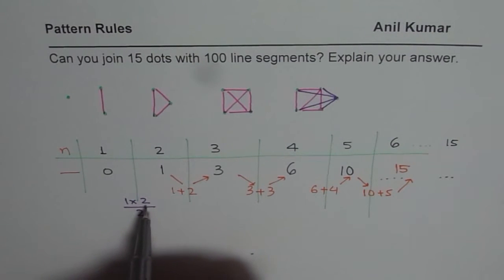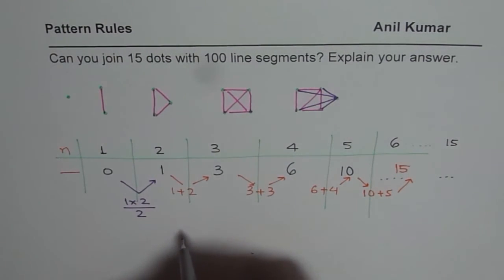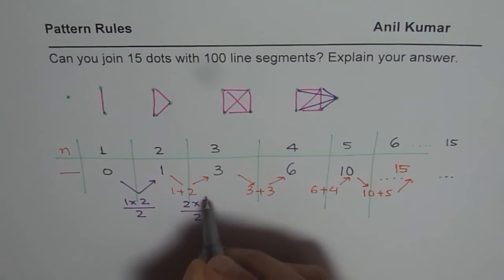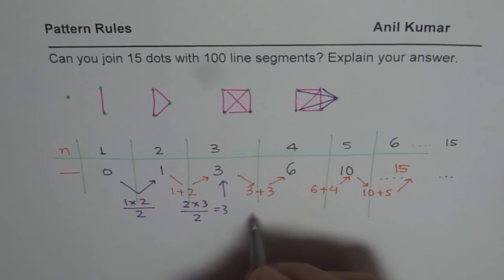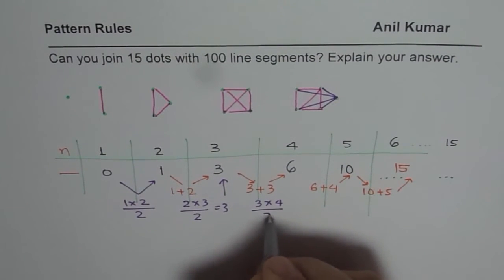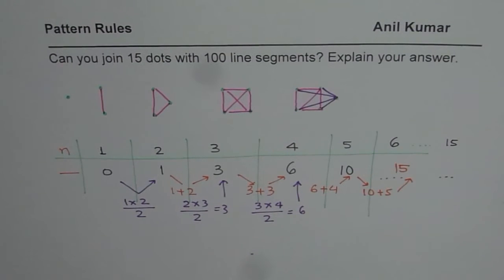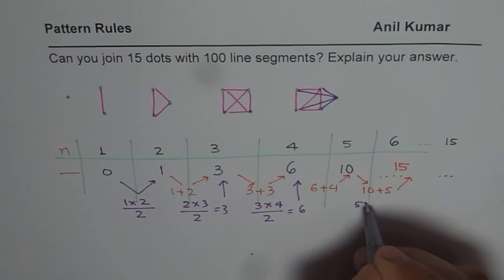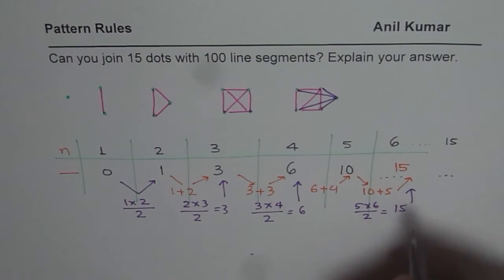The formula is n times (n−1) divided by two. Let's verify: one times two divided by two equals one — correct. Two times three divided by two equals three — correct. Three times four divided by two is twelve divided by two equals six — correct. For six dots: five times six divided by two is thirty divided by two equals fifteen — correct!